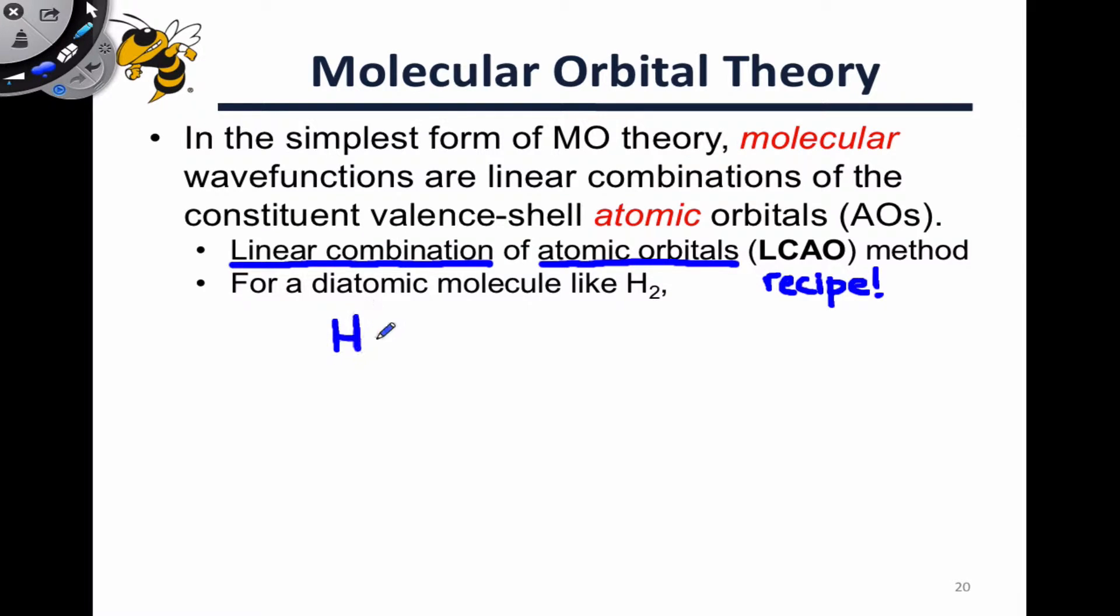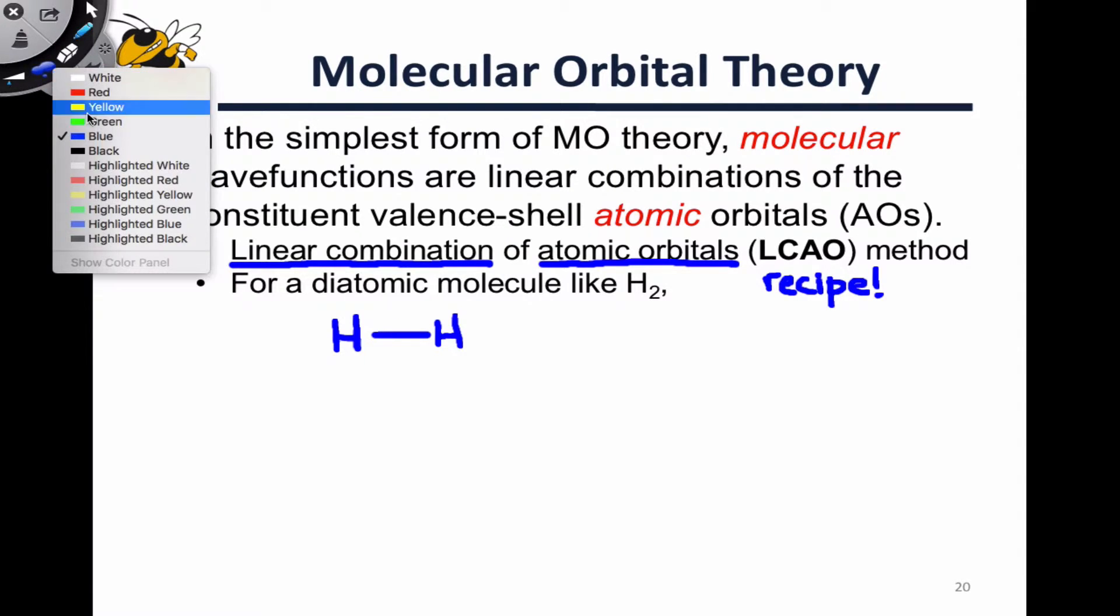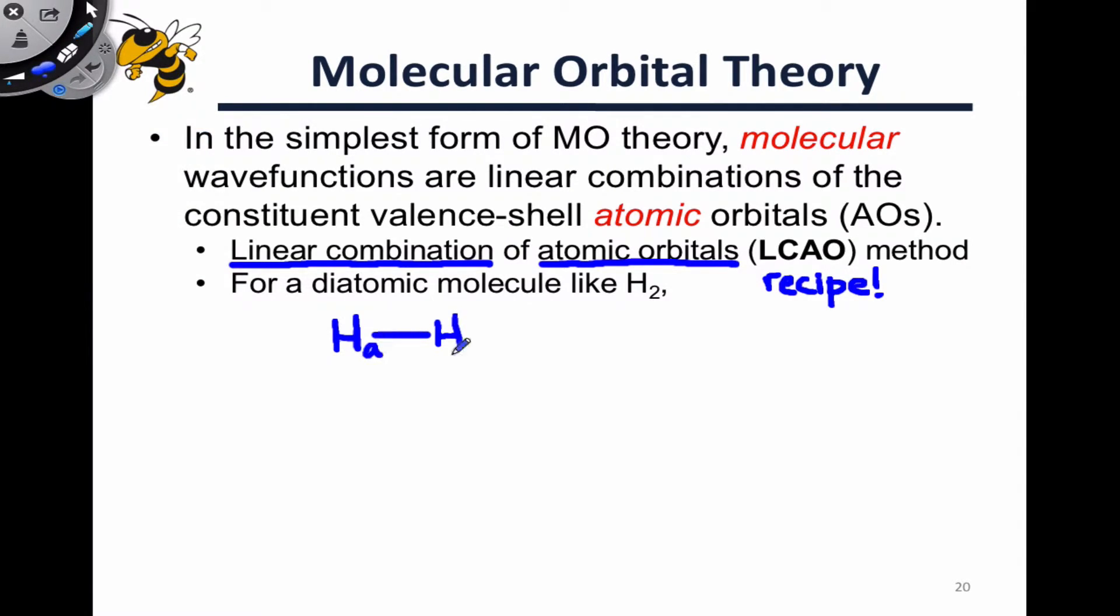For a diatomic molecule like H2, each molecular orbital is going to be composed of a contribution from each of the two atoms in the molecule, let's call them HA and Hb. HA has a 1s atomic orbital on it, and Hb also has its own 1s atomic orbital, and we can think about combining these in two ways to produce two molecular orbitals.